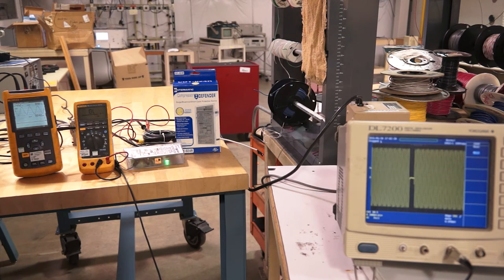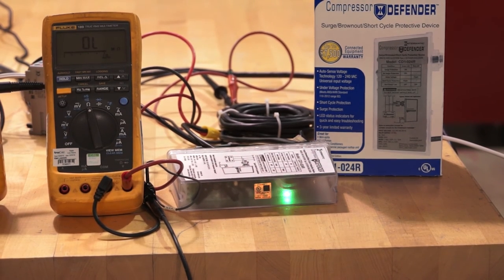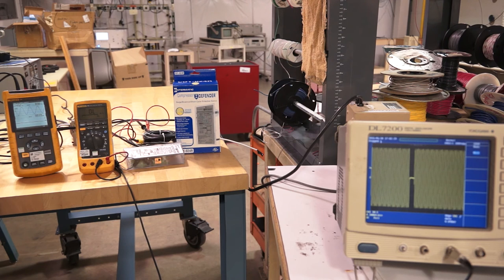The flashing state indicates the compressor defender has shut the central air conditioner system or heat pump down, protecting the equipment, and is now in a three minute short cycle delay mode.